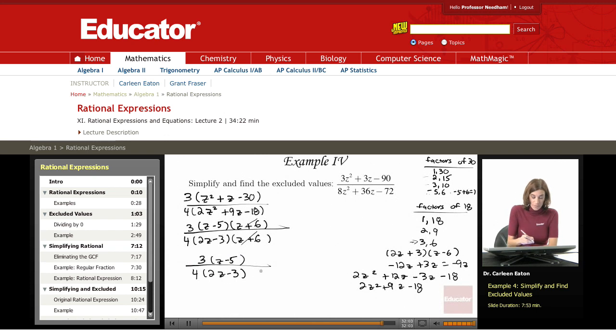Now finding the excluded values, again I'm going to go back up to the original and I'm going to look at the denominator and what I want to do is set this denominator equal to 0 and solve for z. In order to solve for z I need to factor and fortunately I've already done that because that was quite a bit of work. I've factored, I pulled out a greatest common factor of 4 from the trinomial and then I factored the trinomial into this. So that's going to give me 4 times 2z minus 3 times z plus 6 equals 0, divide both sides by 4 to get 2z minus 3 times z plus 6 equals 0.